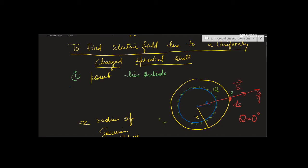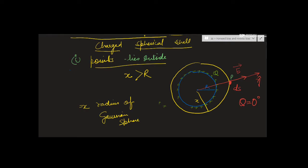For points outside, the distance of the point is greater than the radius of the shell. The blue circle represents the given sphere on which charge q is uniformly spread. Capital R is the radius of the given sphere.